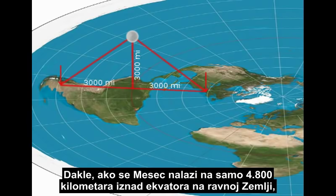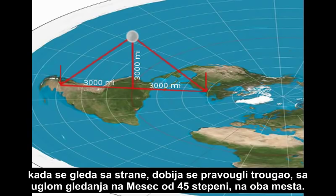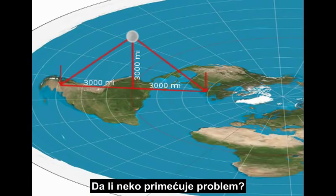So if the Moon is only 3,000 miles high above the equator on the flat Earth, when viewed from the side, this forms a right triangle, with the viewing angles to the Moon being 45 degrees in each location. Anyone notice the problem?